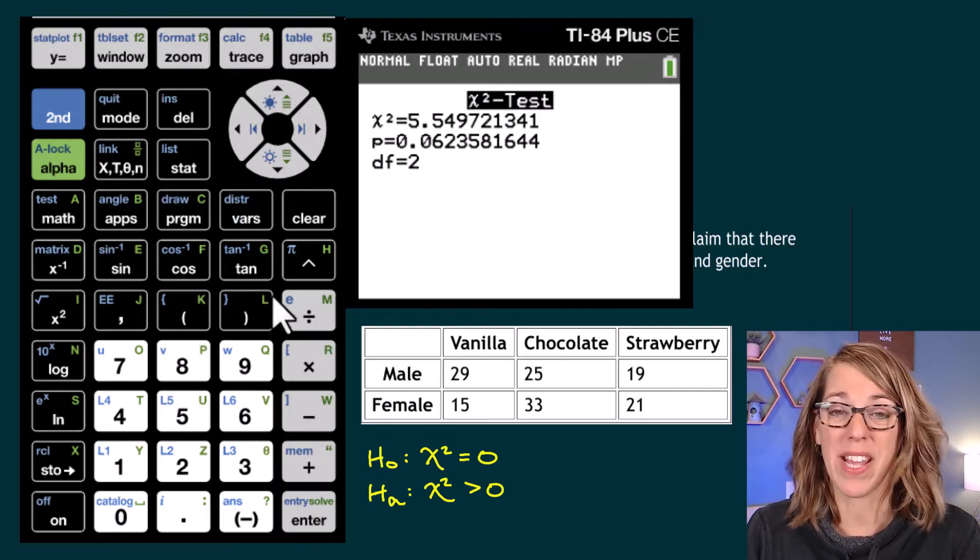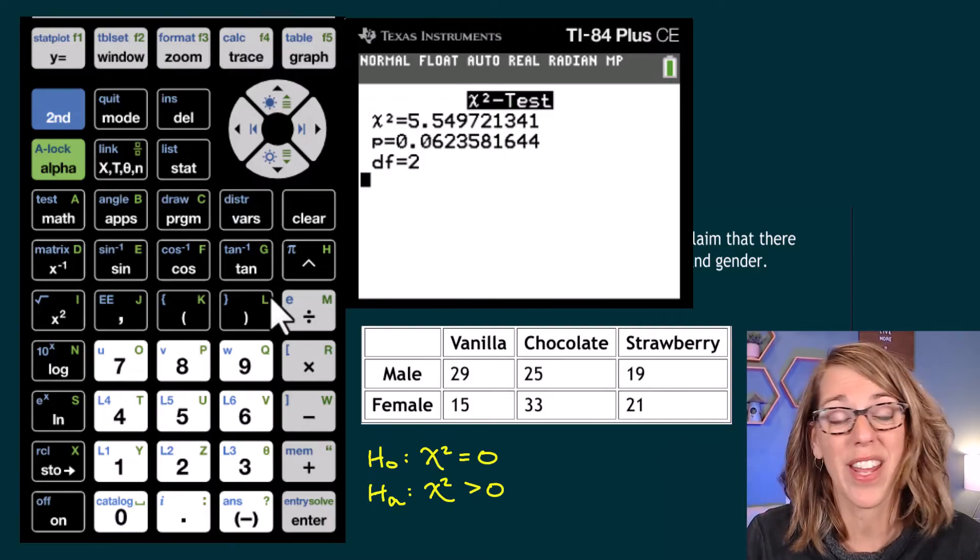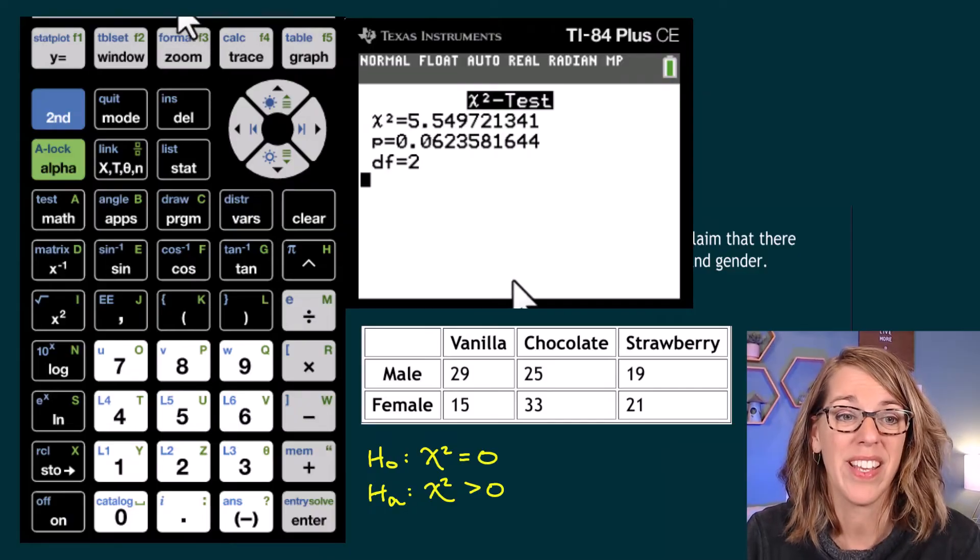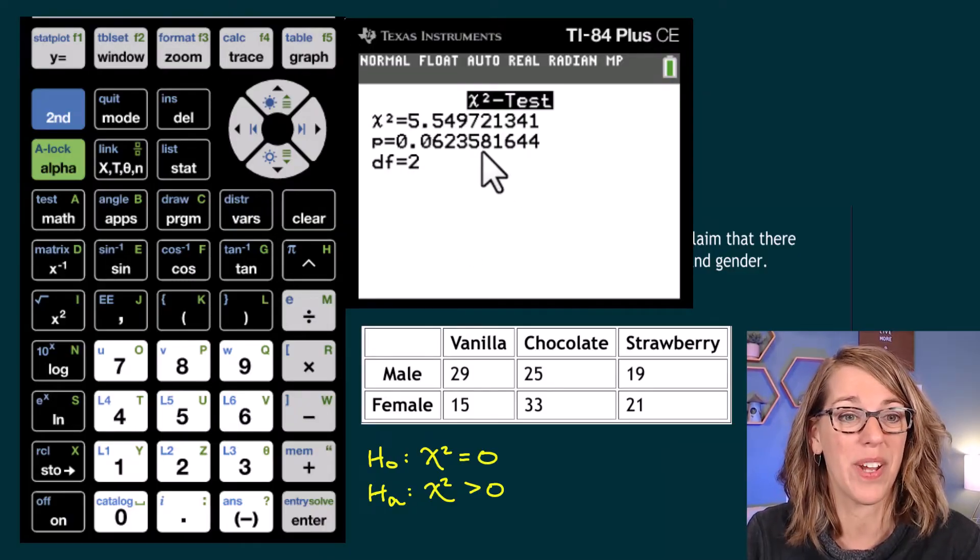So it gives me my chi-square. This is my test value that I can compare to a critical value from, say, a table. It also gives me the p-value, 0.06.